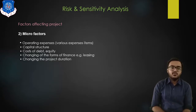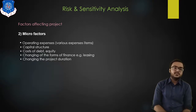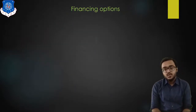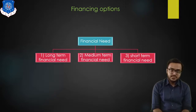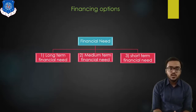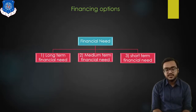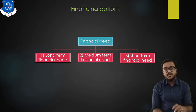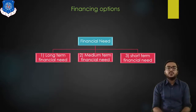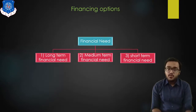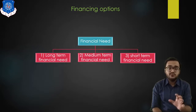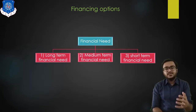Now I would like to start with financial options. Whenever we start any industry, firm, or venture, we have three types of financial need: long term, medium term, and short term. Long term financial needs are generally for a period of 5 to 10 years, and are typically for the purchase of equipment, purchase of land, and creating infrastructure for the industry.